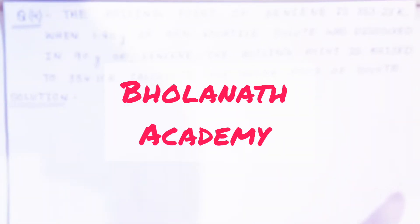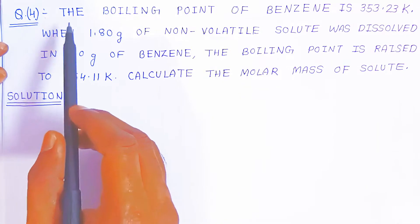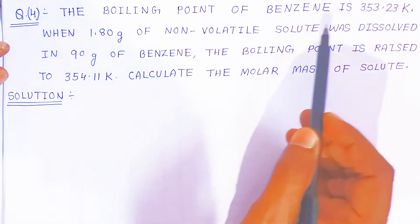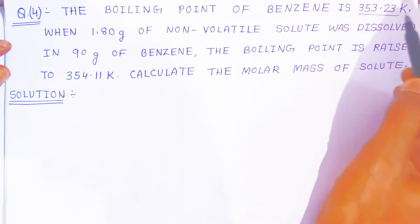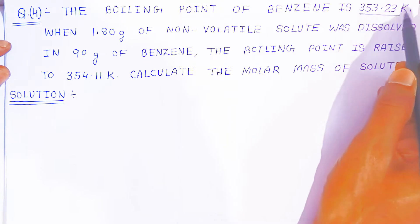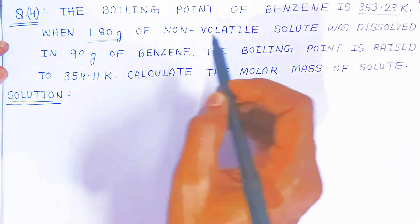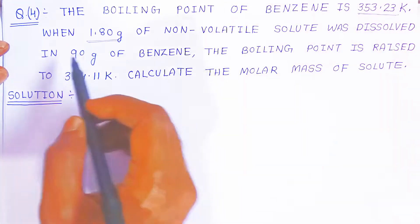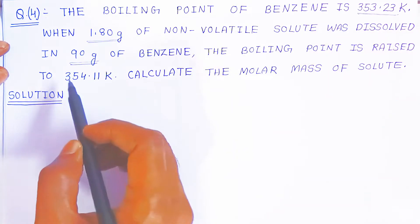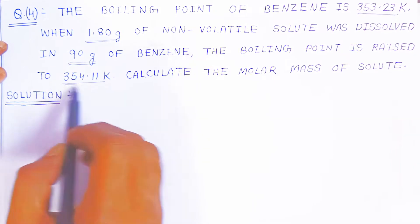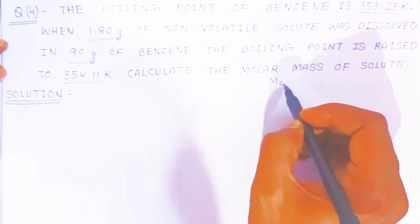Hello students, once again welcome to Bolanath Academy. In this video, we are going to see question number four. The boiling point of benzene is 353.23 Kelvin. When 1.80 gram of non-volatile solute was dissolved in 90 gram of benzene, the boiling point is raised to 354.11 Kelvin. Calculate the molar mass of the solute, that is M2.